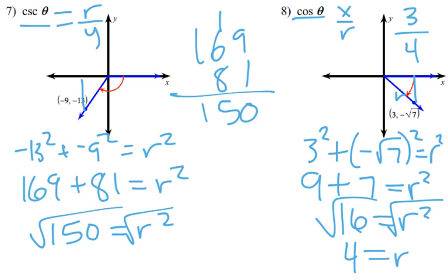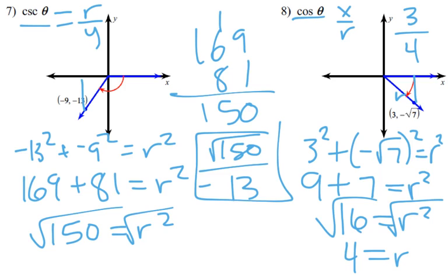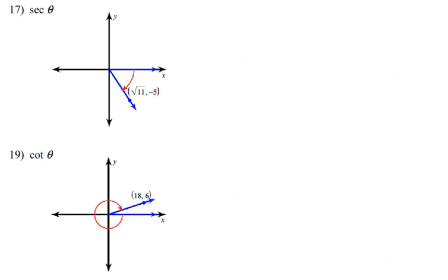So, 150 equals r squared. Take the square root of that. And, we'd end up with the square root of 150, whatever that is. So, you could put that in as a decimal. You could simplify that out if you really wanted to. For us, I'm just going to leave it like that. So, square root of 150 over negative 13. There would be our answer for that one.